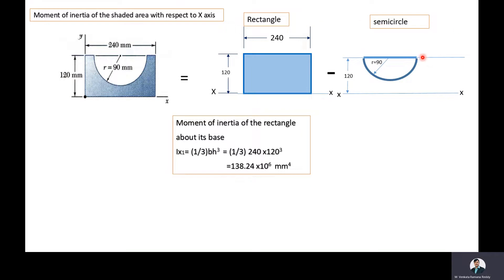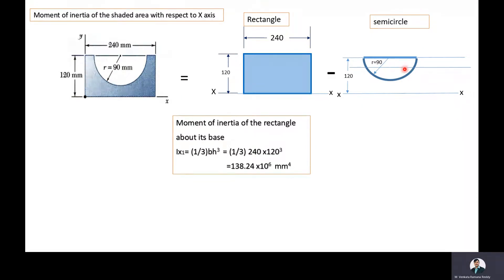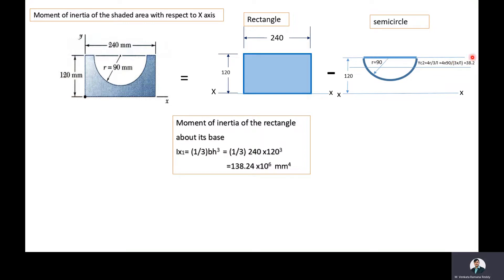Now we will find the moment of inertia of the semicircle about the x-axis. First, we will find the y-coordinate value of the centroid of the semicircle: yc = 4r/3π. Here r = 90 mm. After substituting, yc = 38.2 mm. That is, the centroidal axis of the semicircle is at a distance of 38.2 mm from the diameter edge of the semicircle. The diameter edge of the semicircle is at a distance of 120 mm from the x-axis. The perpendicular distance between the centroidal axis of the semicircle and the x-axis is 120 − 38.2 = 81.8 mm.